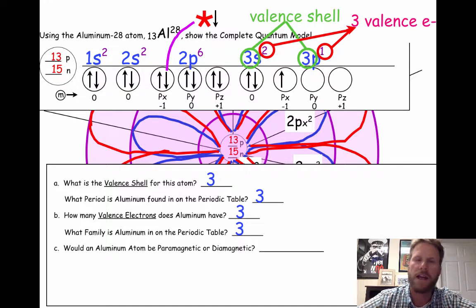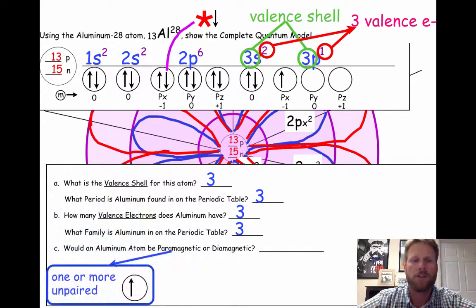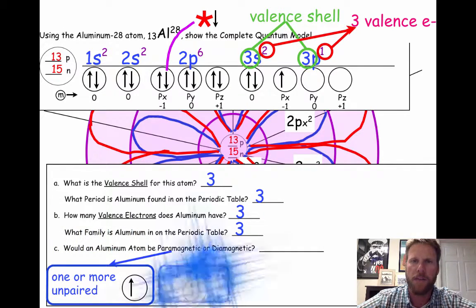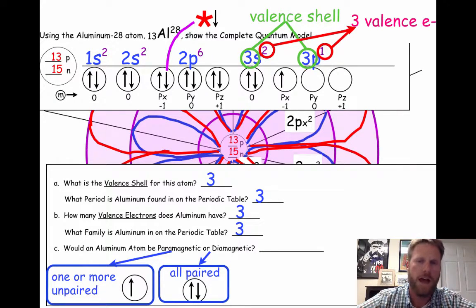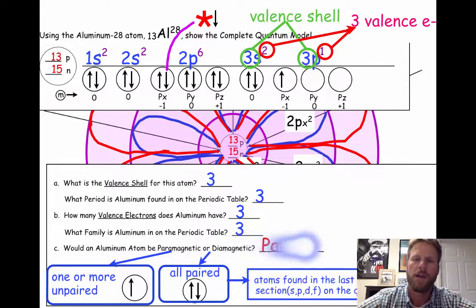Now, is aluminum paramagnetic or diamagnetic? Well, it has an unpaired electron. An unpaired electron means paramagnetic. Paired up electrons mean diamagnetic, if all the electrons are paired up. Well, they're not all paired up, so aluminum is paramagnetic.